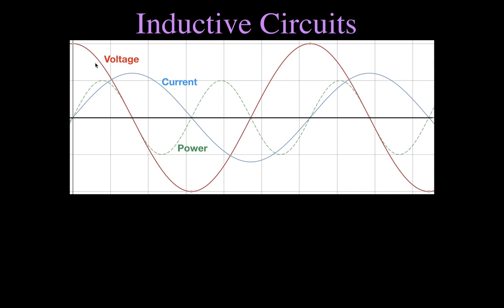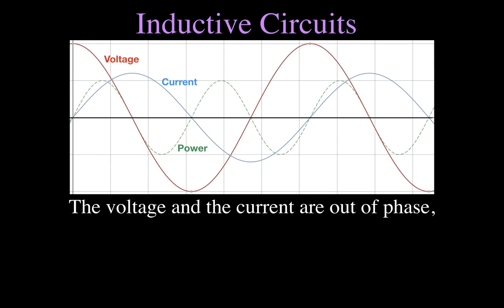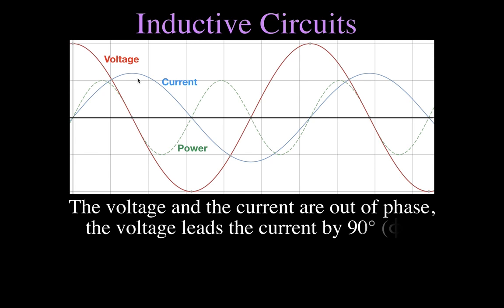The voltage is represented by this red waveform, the current by this blue waveform, and the power by this dashed green waveform. One thing you should recognize for inductive circuits is that the voltage and the current are out of phase — the peak voltage and peak current do not occur at the same point in the cycle. The voltage leads the current by 90 degrees, which we call the phase angle phi.